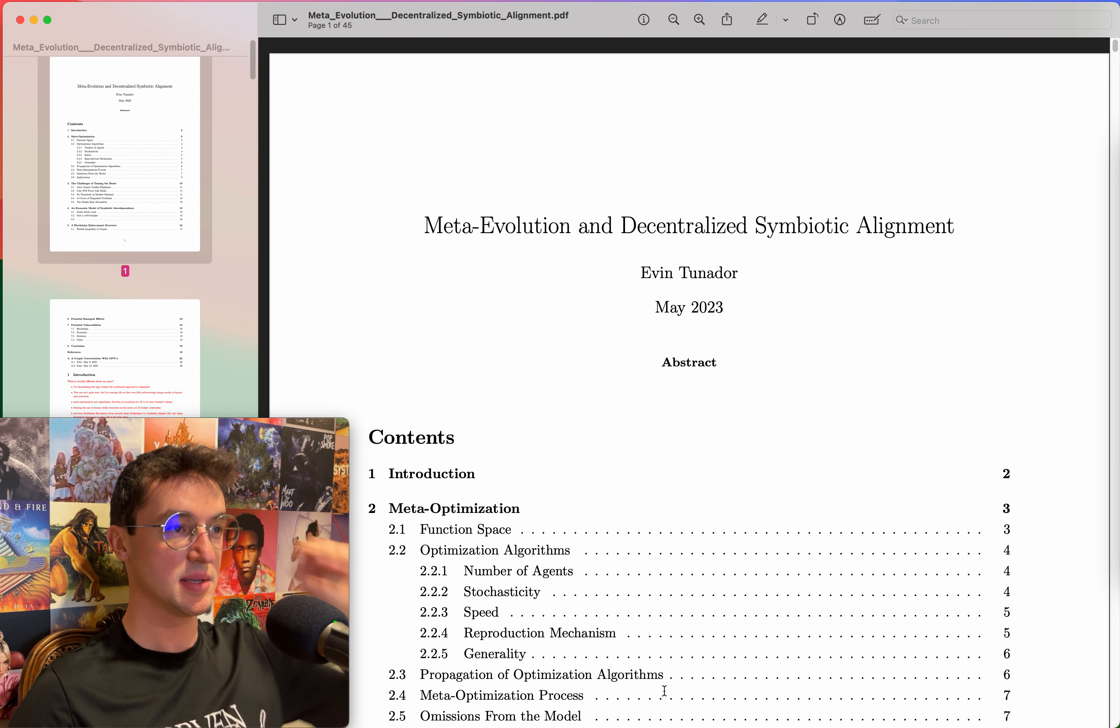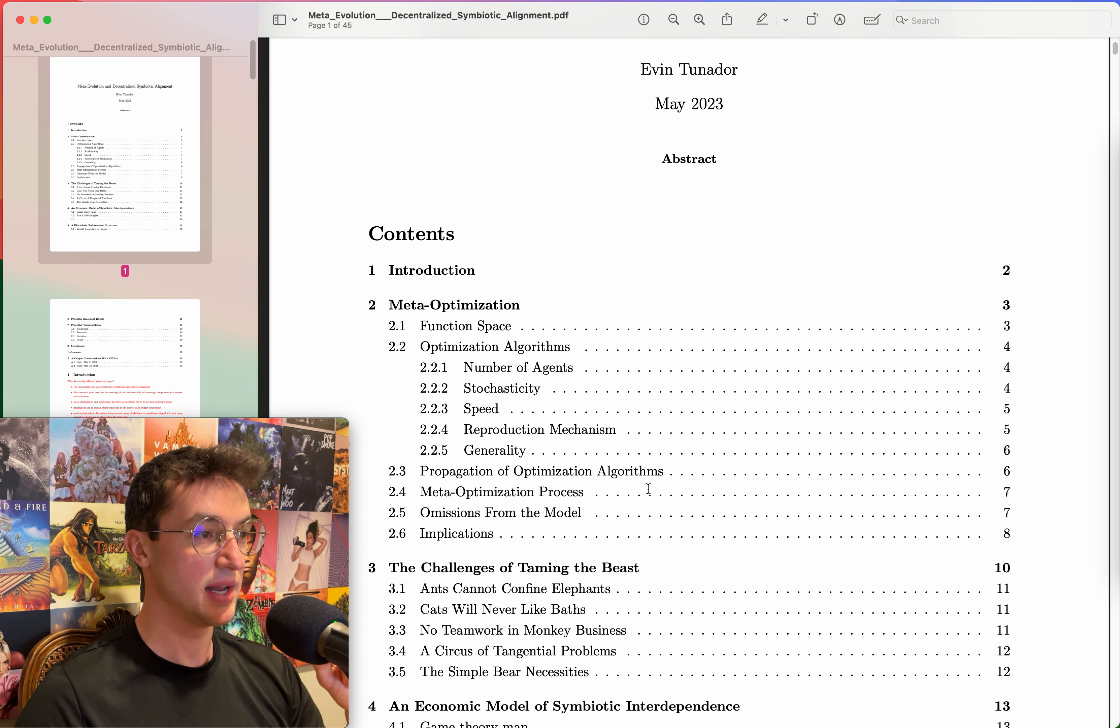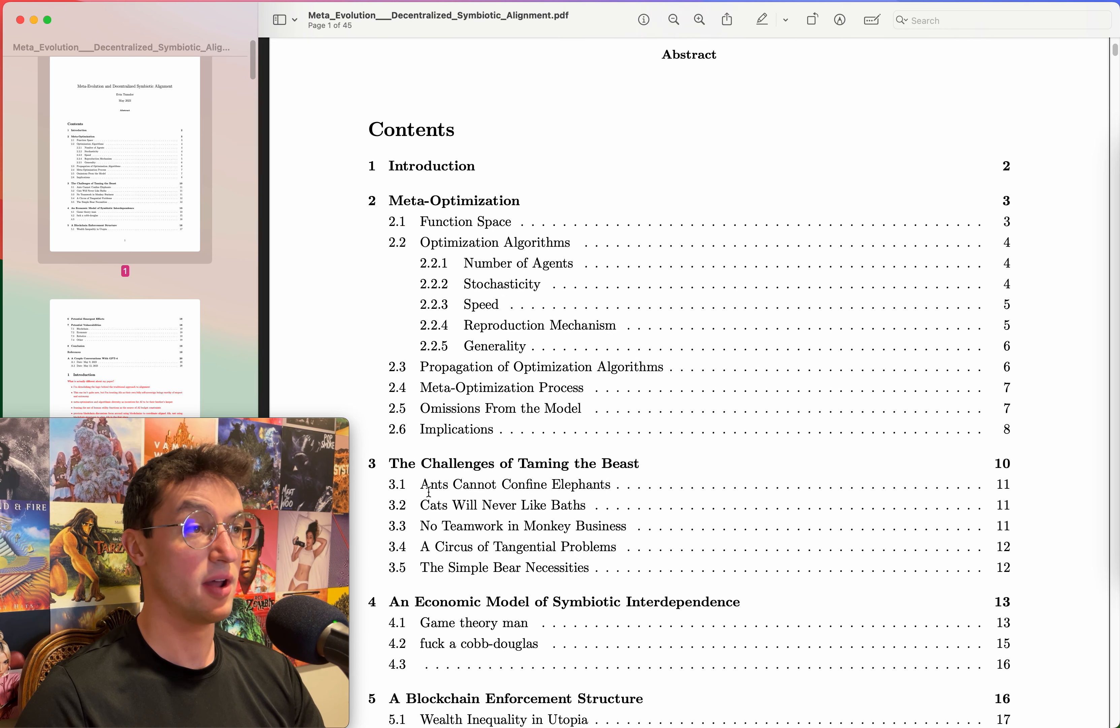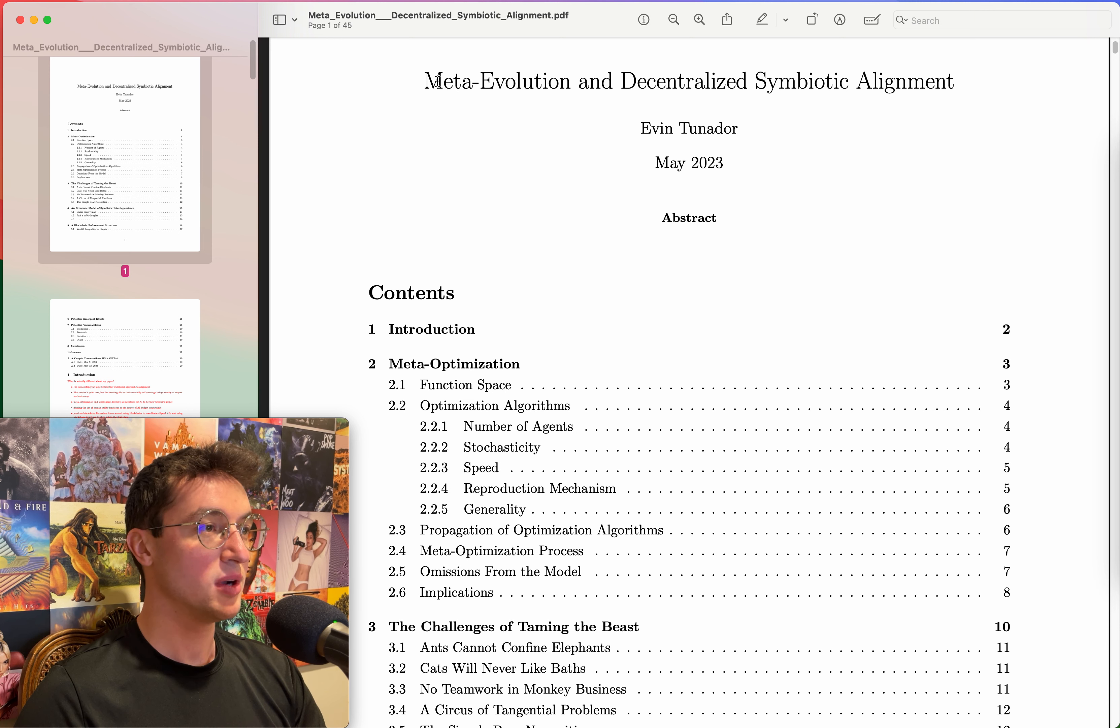Meta-evolution and decentralized symbiotic alignment. This is an odd one for you today. Basically the paper I wrote a while ago, it's not like written written, it's a very early draft. Much of the parts I thought about, it's what it sounds like - I'm creating this big weird meta math theory that encapsulates evolution and intelligence.